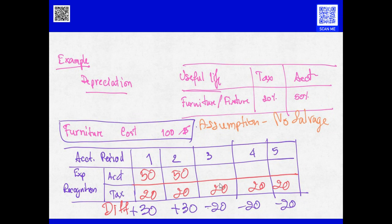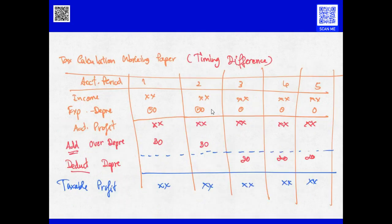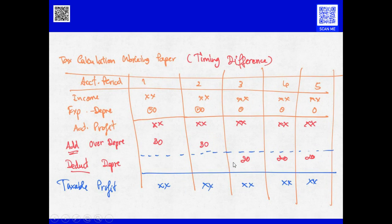This is the mechanism of corporate income tax calculation for the effect of a temporary difference. In year 1, assume income and depreciation expense of 50 baht — the accounting profit is calculated, then we add back 30 baht to get the taxable profit. Year 2 is the same. For years 3, 4, and 5, there is no depreciation in accounting, so we subtract or deduct the 20 baht depreciation to get the taxable profit for each of those years. This is the mechanism of the timing difference.